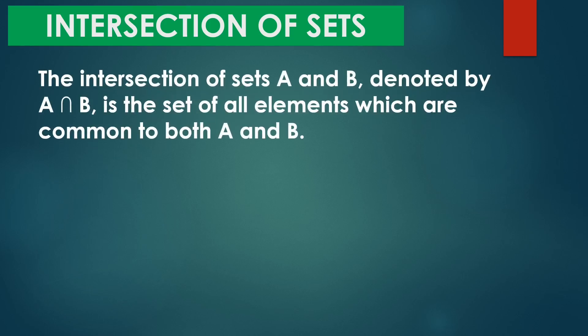The intersection of sets A and B, denoted by A intersection B, is the set of all elements which are common to both A and B. Ibig sabihin, masasabi natin na nag-intersect yung sets natin kung meron silang common elements. So ano yung symbol para sa intersection of sets? Inverted U, o yung baliktad na U.